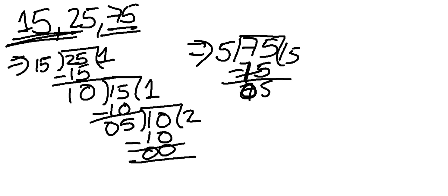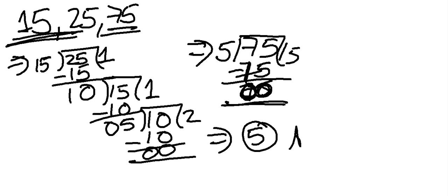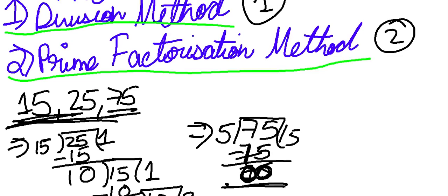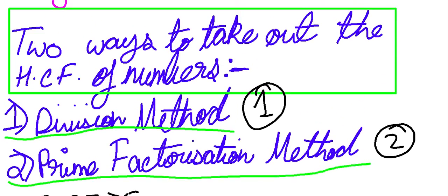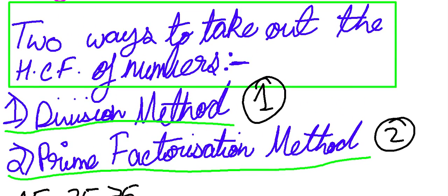So 75 minus 75 is equal to 0. Our answer is 5. The HCF of the numbers 15, 25, and 75 is 5. We have now learned the method of taking HCF of numbers by the division method.